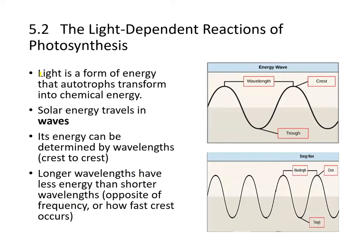What is light? Light is a form of energy that autotrophs transform into chemical energy. Solar energy travels in waves, and the energy can be determined by wavelengths from crest to crest or trough to trough. The longer the wavelength, the less energy. The shorter the wavelength — opposite of frequency — the more energy. So: shorter wavelength, higher energy; longer wavelength, lower energy.